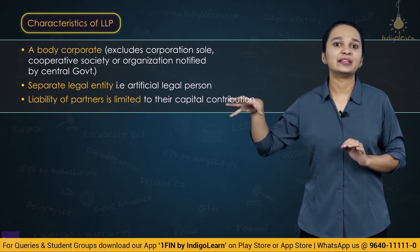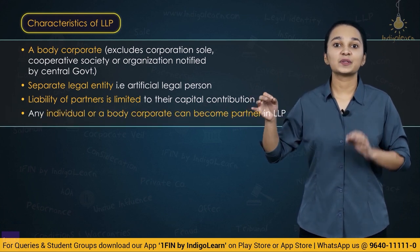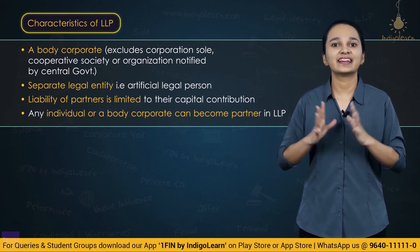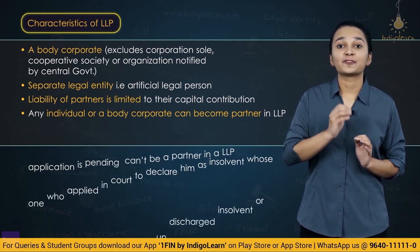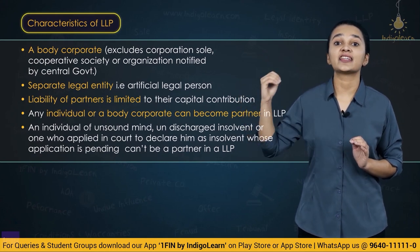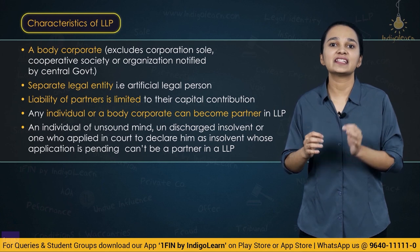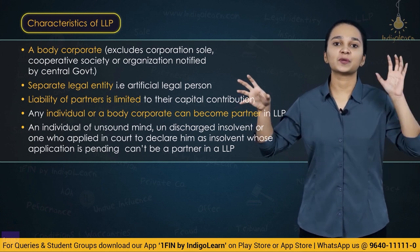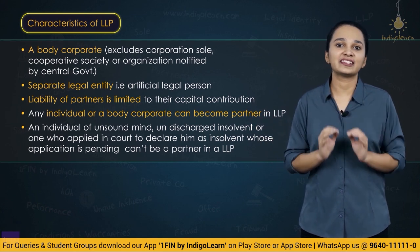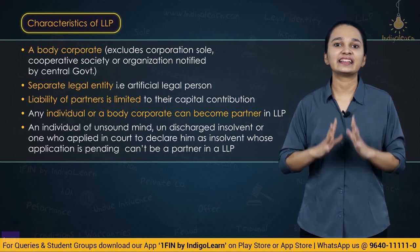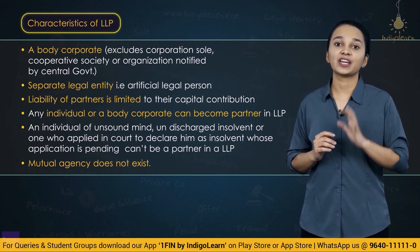The liability of partners of LLP is limited to the extent of their capital contribution. Any individual or body corporate can become a partner in an LLP. When an individual is appointed as a partner, he must not be a person of unsound mind, an undischarged insolvent, or a person with a pending insolvency application. The concept of mutual agency does not hold good in LLP — a partner of LLP acts as an agent of the LLP but not as an agent of the other partners, so his acts bind the LLP but not the other partners.